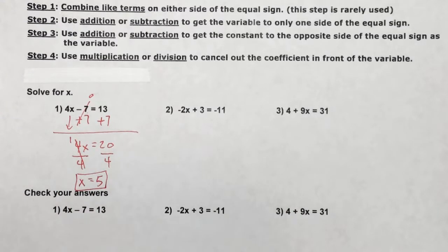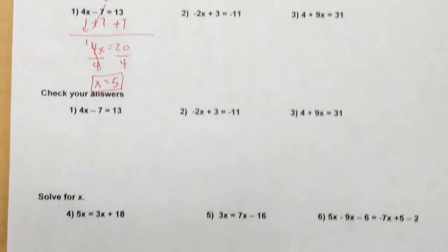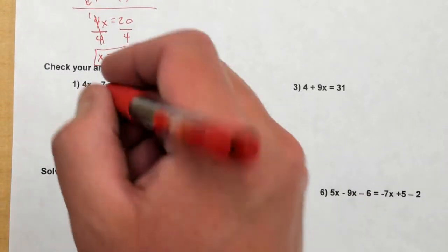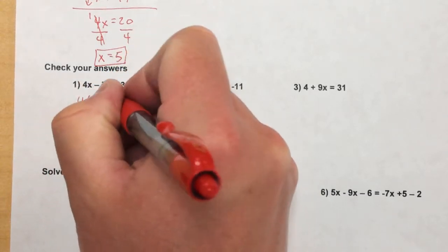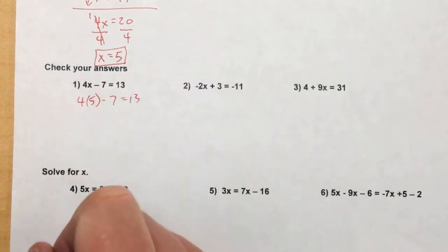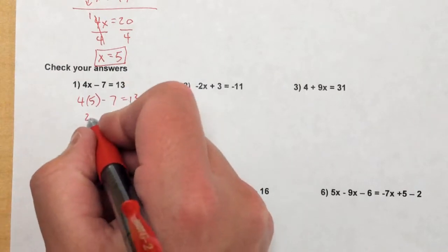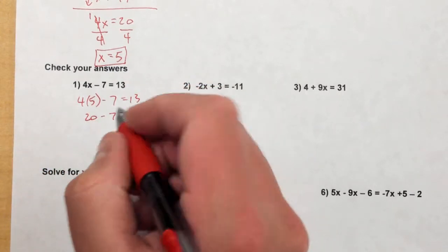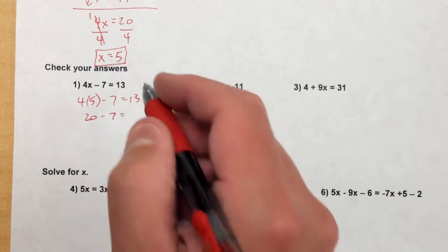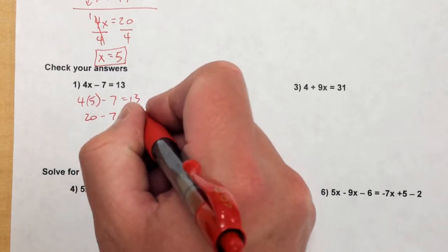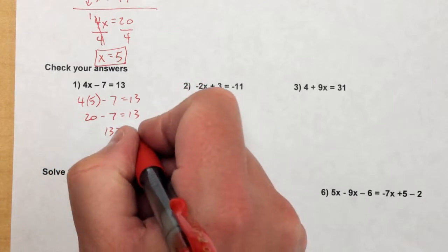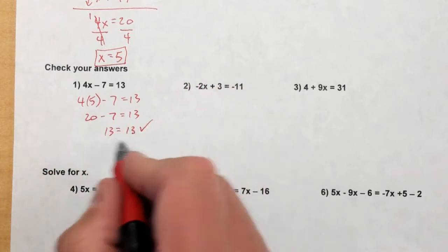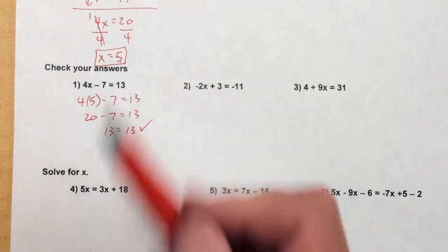We should check our answer to make sure it's right. I'll plug in 5 for x. I get 4 times 5, which is 20 — doing PEMDAS, multiplication before addition or subtraction. So 20 minus 7 is 13. 13 equals 13, so since this balances out, 5 has to be the right answer.